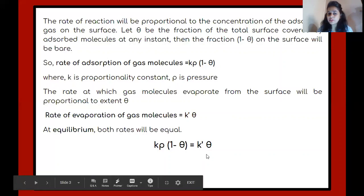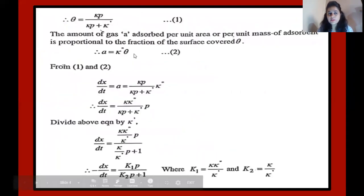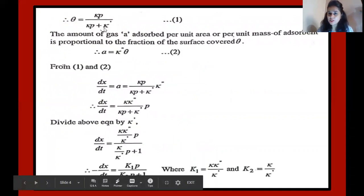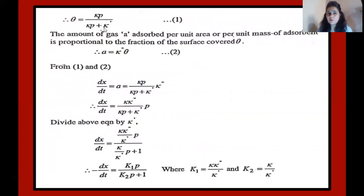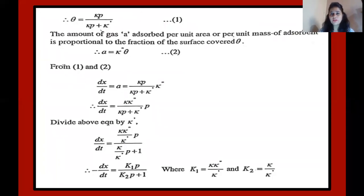At equilibrium: K·P·(1-theta) = K'·theta. Solving this equation, K·P minus K·P·theta equals K'·theta. Taking all theta terms on one side, theta equals K·P upon (K'+ K·P). We have just rearranged the equation and solved the theta value. Now, the rate of adsorption A equals K'·theta. K and K' are proportionality constants. So, dx/dt equals A, placing the theta value: dx/dt = (K·P / (K' + K·P)) · K'.